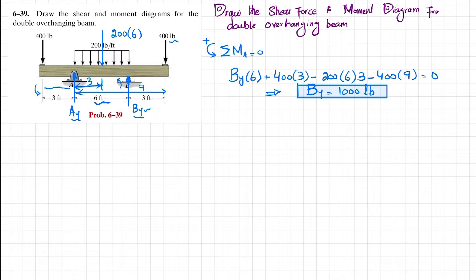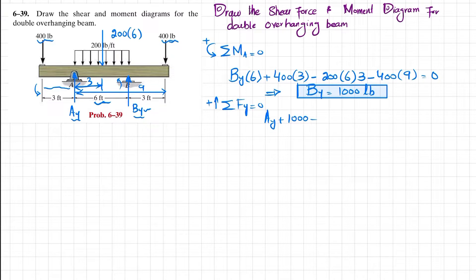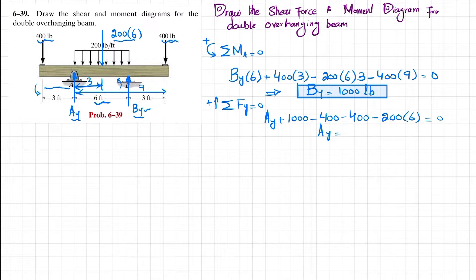Now we apply force equilibrium to find Ay. Ay (upward) plus By (1000 lb) minus 400 minus 400 minus 200 multiplied by the length six equals zero. Solving this gives Ay equal to 1000 pounds.